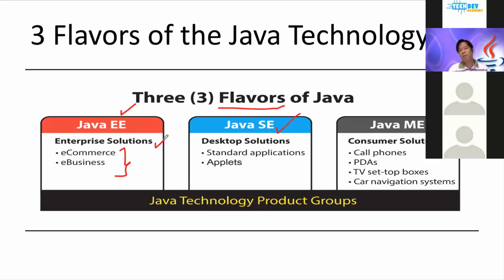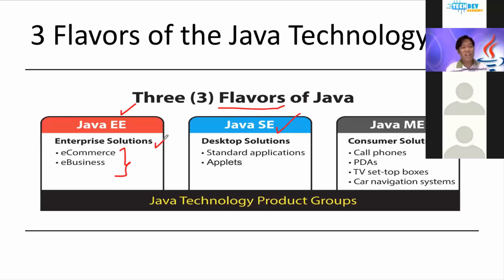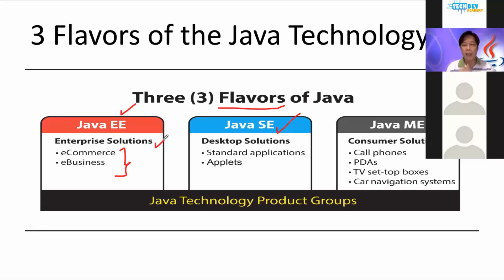For example, you have an enrollment system running at your respective schools. Right now most schools are doing enrollment online. We're even teaching online. You can enroll or buy something online, and chances are there are Java codes running at the back-end.